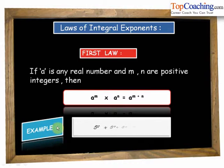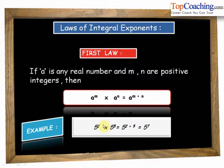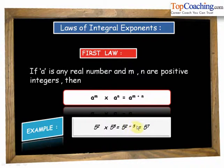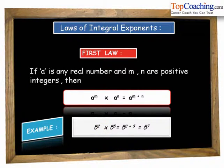For example, 5 squared into 5 to the power of 5 can be written as 5 to the power of 2 plus 5, which is equal to 5 to the power of 7. We simply add these indices or exponents.